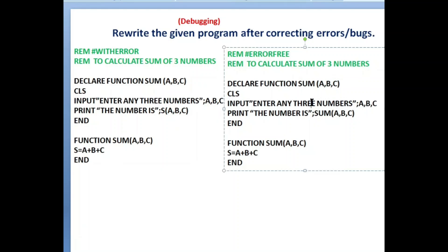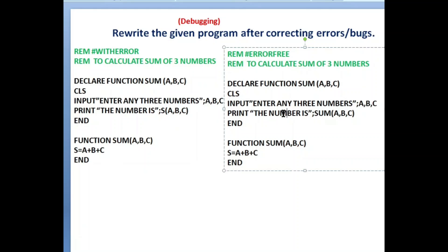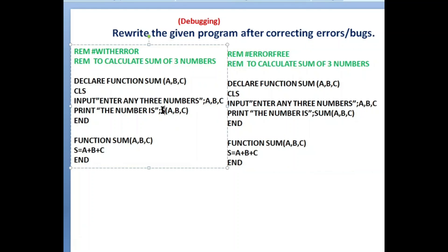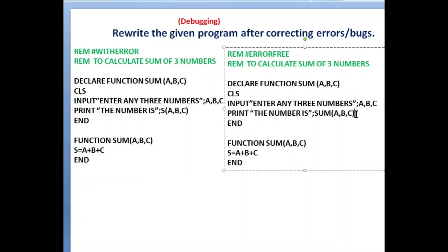The program is written to calculate the sum of three numbers using a function — declare function sum(a, b, c). The input line is also correct; I'm taking three inputs in a single line. In the print statement I am calling the function: function name is sum, and I call it as sum(a, b, c). The correction here is that when calling a function you should write the same function name and parameters — so the first error is corrected: sum(a, b, c).